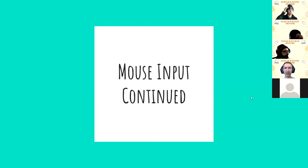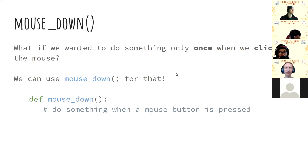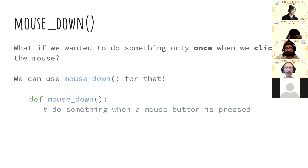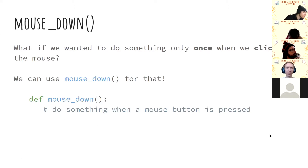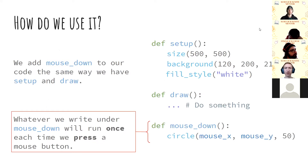For today's content, we're going to start with mouse input. We've already learned a little bit about how to work with mouse input, but we're going to introduce another way of working with it. You can define your own function — similar to def setup and def draw, you can use def mouse_down, and the code there is going to run whenever the mouse gets pressed. This will only happen once each time you click. Every time you're clicking with the mouse, whatever code we have inside that function will be running.